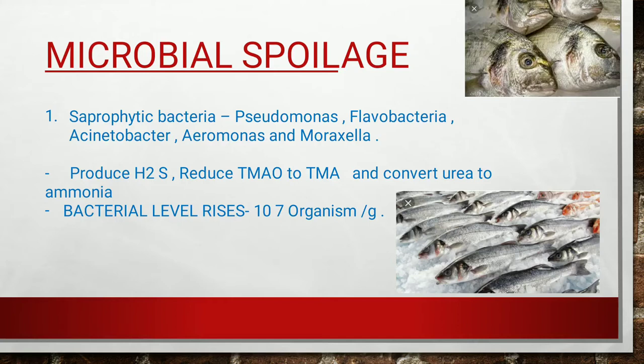When fish are alive, they have a primary defense organ. After death, however, bacteria that are present on the mucus layer, skin layer, and intestine — which do not harm the live fish due to that defense — begin to invade the tissue. This leads to microbial spoilage.